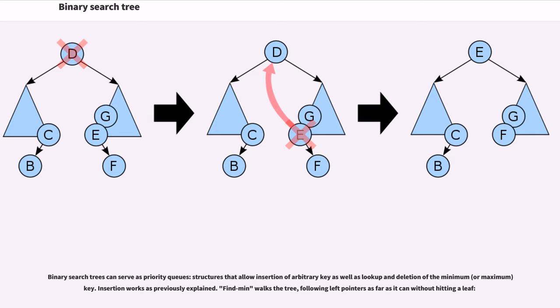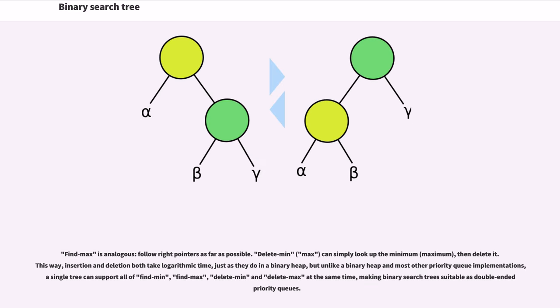Binary search trees can serve as priority queues, structures that allow insertion of arbitrary key as well as lookup and deletion of the minimum or maximum key. Insertion works as previously explained. Find min walks the tree, following left pointers as far as it can without hitting a leaf. Find max is analogous, follow right pointers as far as possible. Delete min/max can simply look up the minimum/maximum, then delete it this way. Insertion and deletion both take logarithmic time, just as they do in a binary heap. But unlike a binary heap and most other priority queue implementations, a single tree can support all of find min, find max, delete min, and delete max at the same time, making binary search trees suitable as double-ended priority queues.